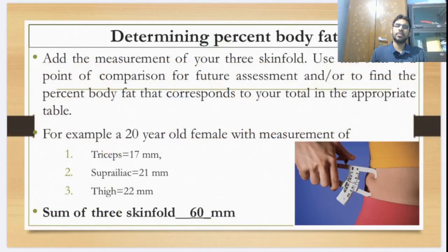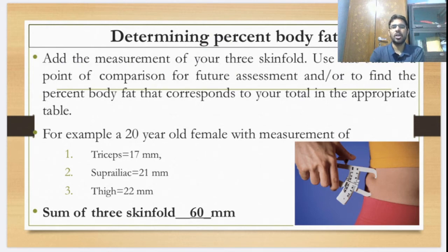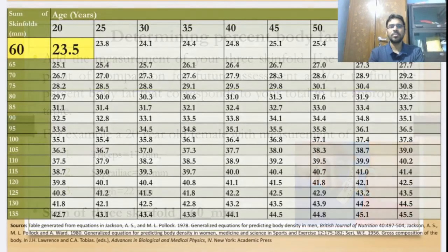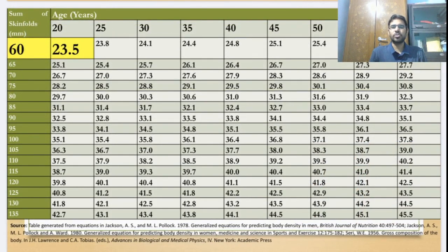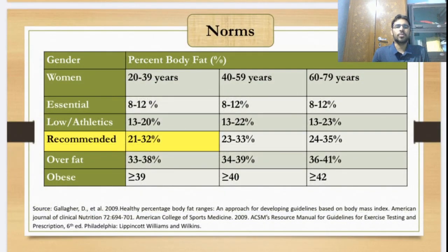Record these measurements in a table — for example, triceps is 7mm, suprailium and thigh is 22mm. Sum all these measurements. For example, a 20-year-old female records all measurements and the total is 60mm. There is a table to check the body fat percentage — for age 20 and 60mm total, you get 23.5%. As per the norms developed for body fat percentage, 23.5% falls under the recommended category.